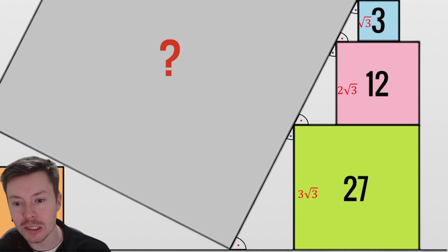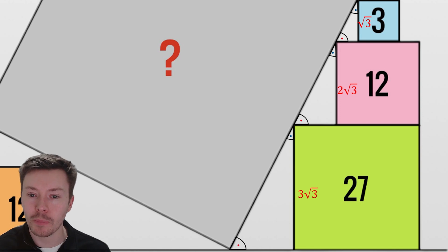Next, I wanted to use the fact that the pink and green squares align on that right hand side. The base of the pink square is 2√3, and the full length at the top of the green square is 3√3, so this must be √3.